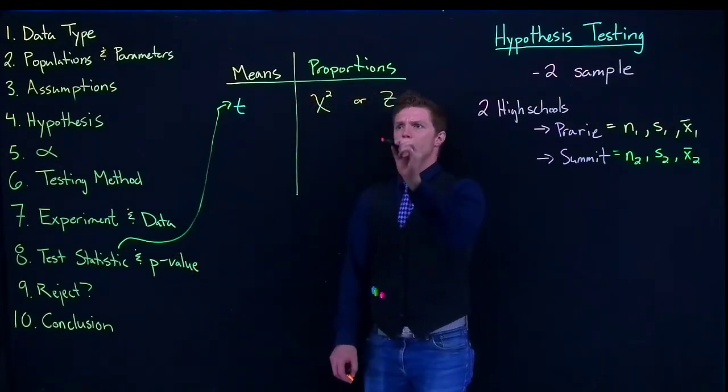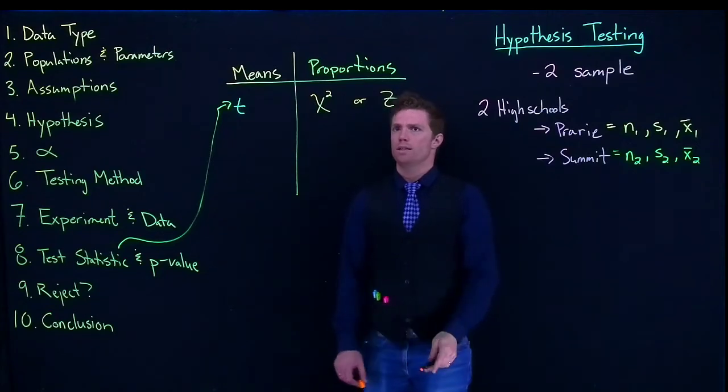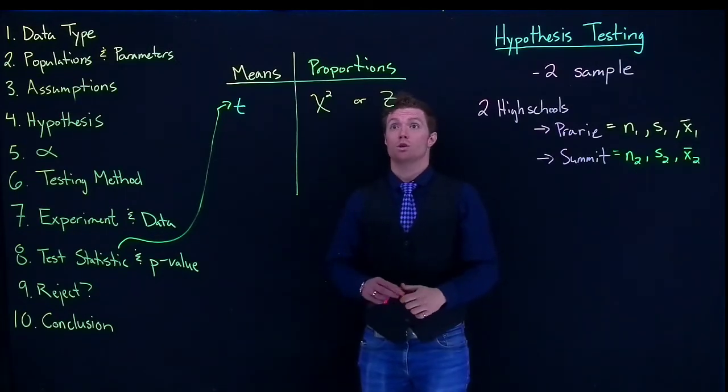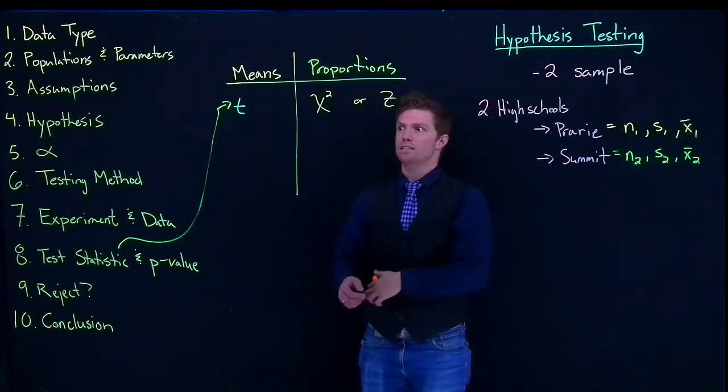It's just a slightly different method and we'll be using the chi-squared method, but sometimes you also see with the proportions, like we do with our one sample proportions, a z-test.